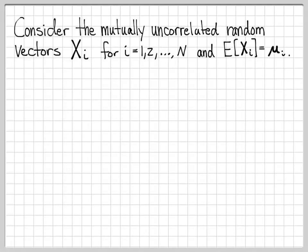In this problem, we're working with a collection of mutually uncorrelated random vectors. The random vectors we're denoting as the Xi for i equal 1 to n, so there are n of these random vectors. Each one has a mean vector mu_i, and they are all mutually uncorrelated.